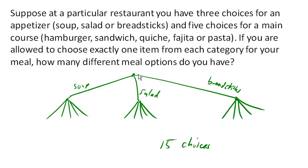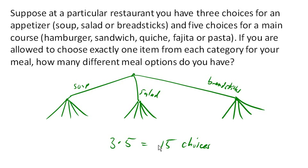Now you may have noticed — where does that 15 come from? It's three choices for our first decision times the five choices for the second decision, because we have three of these little branchy tree things. So we end up multiplying those choices together, and that's exactly how this works. Let's look at another one.